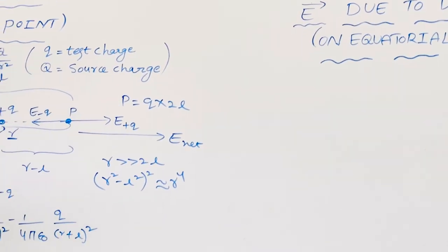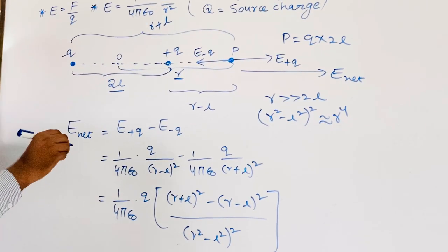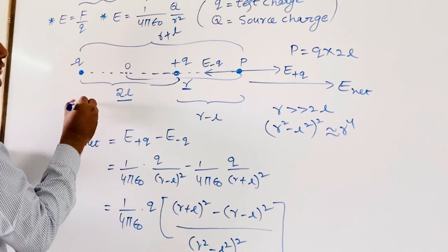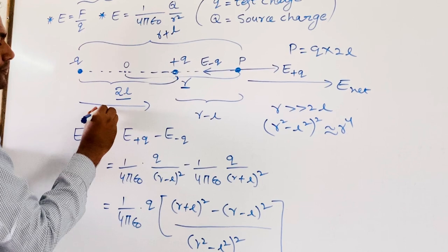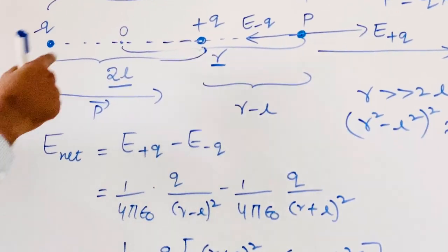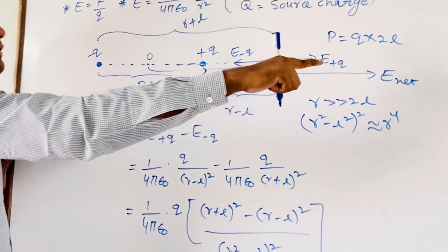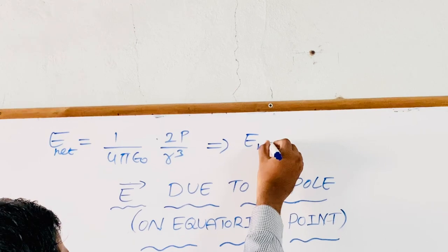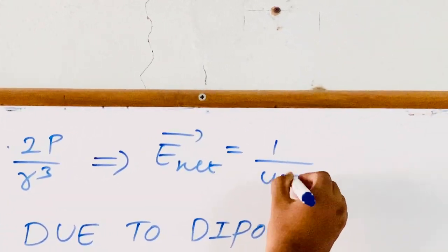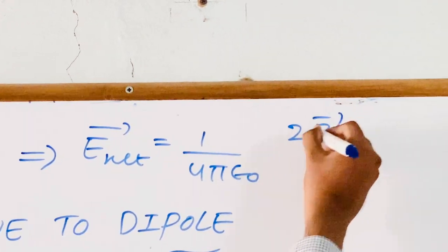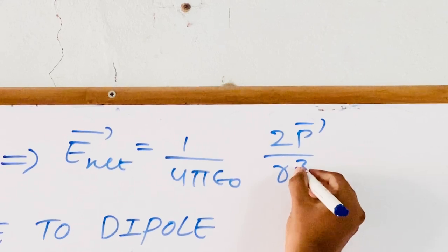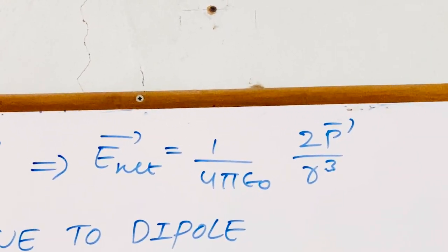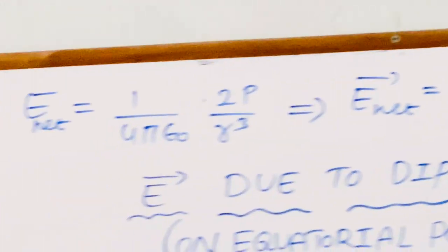If we want to express this in vector notation, we note that the direction of the dipole moment P vector is from minus Q to plus Q, which is rightward. The resultant field is also in the rightward direction. Thus the direction of E net and P vector is the same, so we write: E net vector equals 1 by 4 pi epsilon 0 into 2P by R cubed, in the direction of P, at axial distance R from the center.